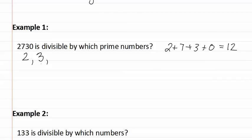Next, we see if it is divisible by five. Remember, the last digit needs to be a five or a zero. Since it is a zero, we know the entire number is divisible by five.